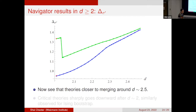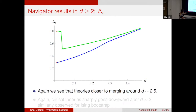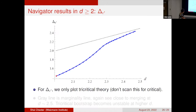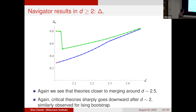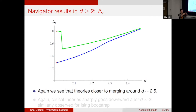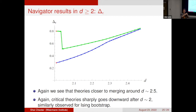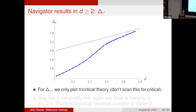For Δ_{ε'}, only the tricritical theory line is shown (since ε' is not relevant to the critical setup). The gray line shows marginality — Δ_{ε'} equals d. We see that Δ_{ε'} is getting very close to being marginal as d approaches 2.5. From all these plots, the same pattern emerges: the two theories get closer to each other, Δ_{ε'} goes to marginality, and both trends point toward merger at around d equals 2.5. We cannot reach d equals 2.5 precisely due to numerical instabilities, but we get as close as possible.